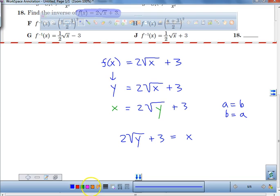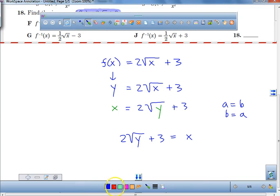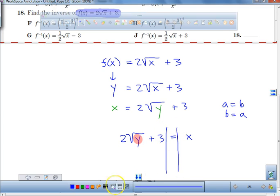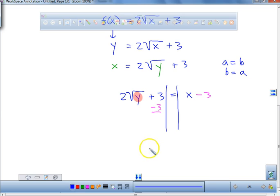Now to solve for my y variable, what am I going to do first? Minus 3. Okay, we're going to take away 3 from that side, take away 3 from the x. So we have 2√y = x - 3.